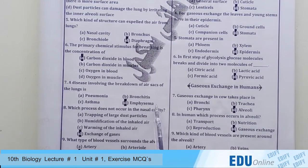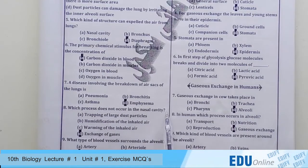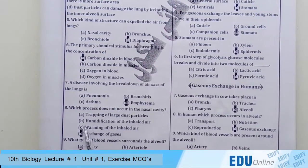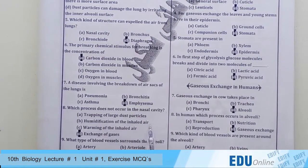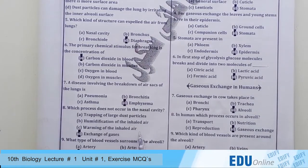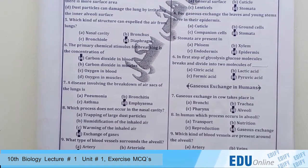Next question: a disease involving the breakdown of air sacs of the lungs is — pneumonia, bronchitis, asthma, or emphysema? The answer is emphysema. Which process does not occur in the nasal cavity — trapping of large dust particles, humidification of inhaled air, warming of inhaled air, or exchange of gases? The answer is exchange of gases.